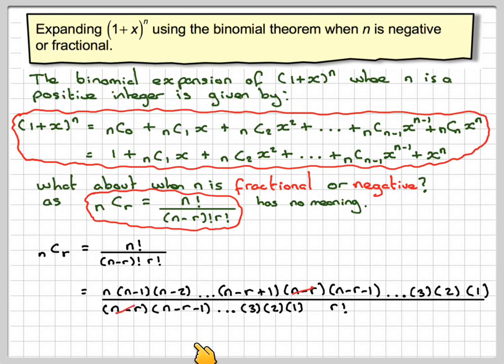All the other ones in between will cancel out including the 3, 2, and 1. So on top you're left with n·(n-1)·(n-2)·...·(n-r+1) over r!.